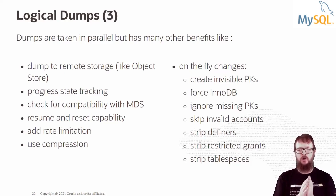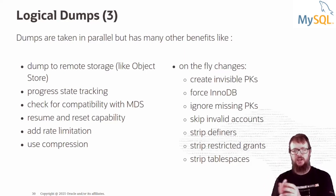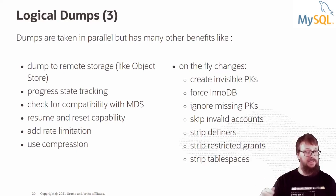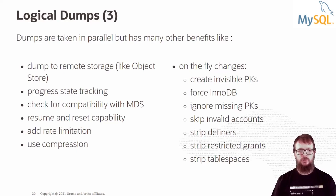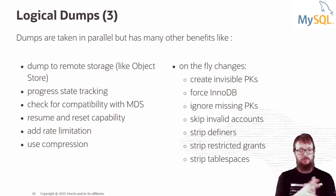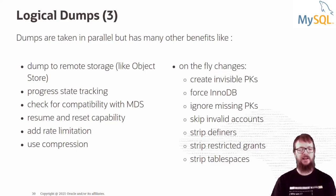Invisible primary keys are wonderful if you decide to migrate to MDS and want to enable HA where primary keys are mandatory. For your application there is no change at all, but you'll have invisible primary keys in MDS. I always recommend using primary keys — if you have none, please use invisible primary keys. You can also force InnoDB engine, ignore missing primary keys, skip invalid accounts, strip restricted grants (useful when going to the cloud where some grants are not available).